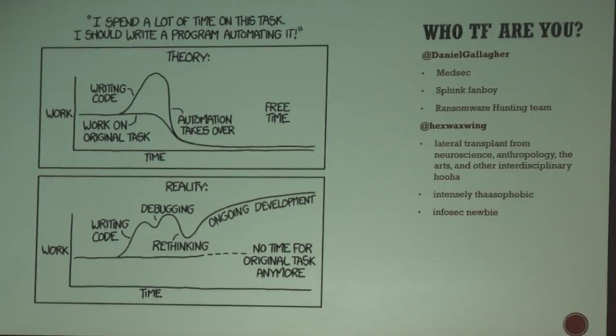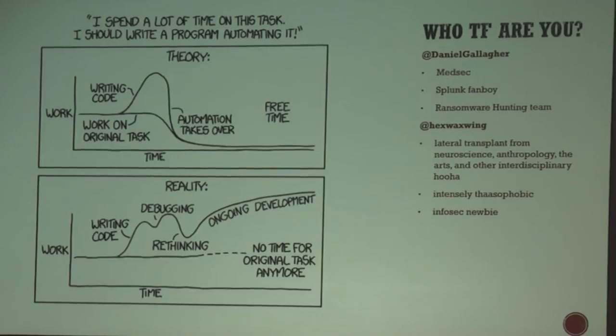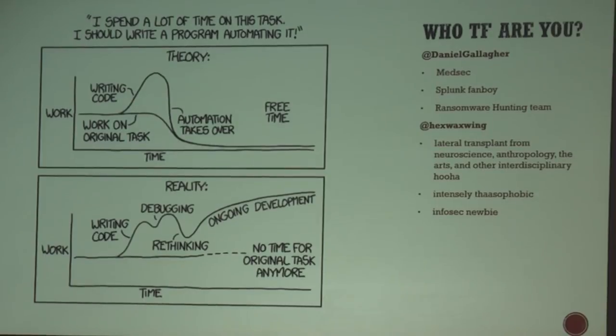My name's Daniel Gallagher. Most people know me on Twitter as Grumpy Cat, but my background is in MedSec. I recently came out of MedSec to work alongside Wax at a company where we develop information security training environments. It was founded by rogue AI researchers interested in breaking down traditional educational paradigms.